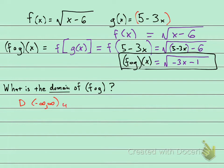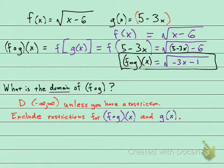So your restrictions, what are you going to exclude? We have to exclude these two things: we have to exclude restrictions that we find in the composite f of g of x, and we also have to exclude any restriction we see in just the g of x.